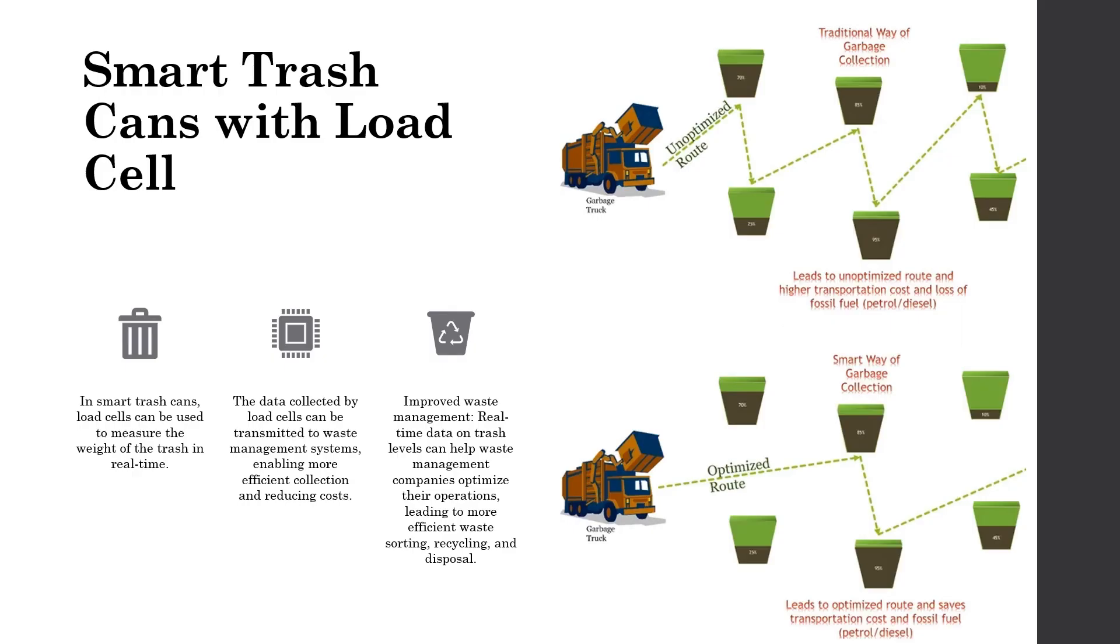What happens in a smart trash can is there is a load cell attached in the trash can which monitors the weight of the waste in real time. The load cells can help waste management companies optimize collection schedules based on the actual amount of trash generated, reducing collection frequency and costs.